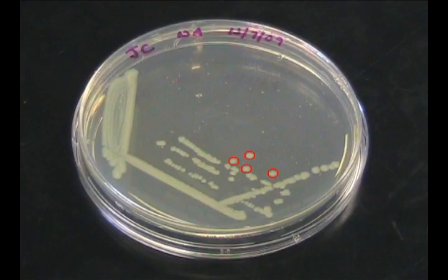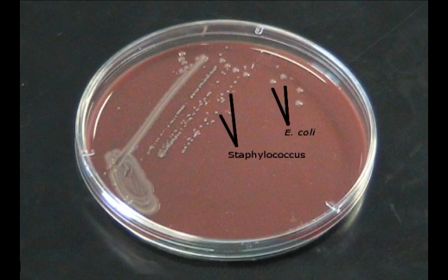Following incubation, you should be able to see single isolated colonies. On this chocolate blood agar plate, you can see different colony morphologies of different bacteria. On this plate, you can see the small off-white colonies of Staphylococcus and the larger smooth colonies of E. coli.